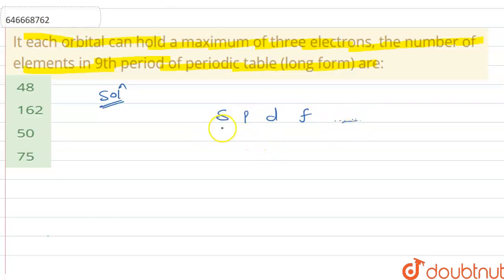So s having one orbital, p having three, d having five, and f having seven.